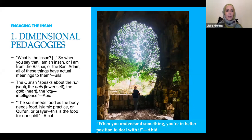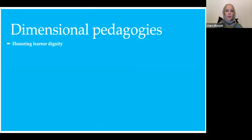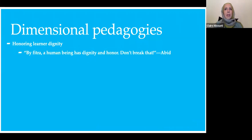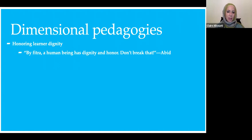Some examples of dimensional pedagogies are honoring learner dignity — this is part of their fitzra. By fitzra, a human being has dignity and honor; don't break that. An example was described by an educator called Gina: when having children recite Quran, non-native Arabic speakers will sometimes mispronounce words. Rather than having them repeat it over and over and become embarrassed in front of their peers, she would allow them to move on and then work with them one-on-one. That is a way of honoring their dignity, speaking directly to their fitzra.